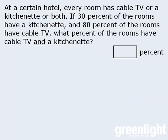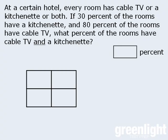As such, we can solve this question using the double matrix method. So let's reserve the top row for rooms with cable TV, and the bottom row for rooms without cable TV. Next, we'll reserve the left-hand column for rooms that have a kitchenette, and the right-hand column for rooms that do not have a kitchenette. Now since we are not told the total number of hotel rooms, and since the question asks us to find a certain percentage, let's say that there are 100 hotel rooms altogether.